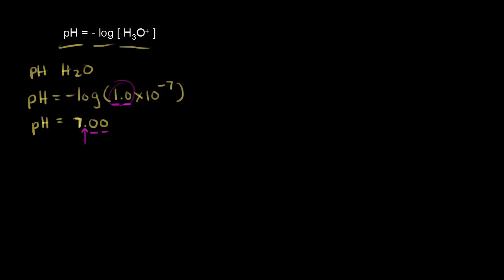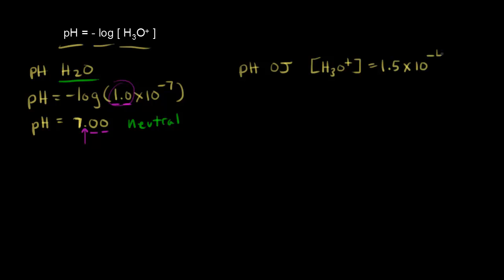Water has a pH of 7, and we know that water is neutral. Let's compare water to another example — orange juice. We're trying to calculate the pH of orange juice, and let's say we measure the hydronium ion concentration to be about 1.5 times 10 to the negative 4 molar.